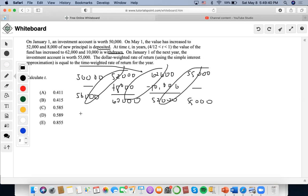So we could do $52,000 over $50,000 times $62,000 over $60,000 times $55,000 over $52,000 equals to 1 plus i. So let's first solve this.